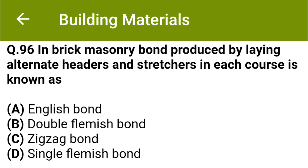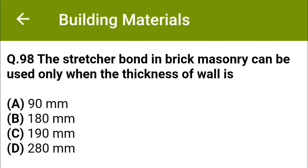In brick masonry, the bond produced by laying alternate headers and stretchers in each course is known as: option A, English bond; option B, double Flemish bond; option C, zigzag bond; option D, single Flemish bond. The correct answer is option B, double Flemish bond.